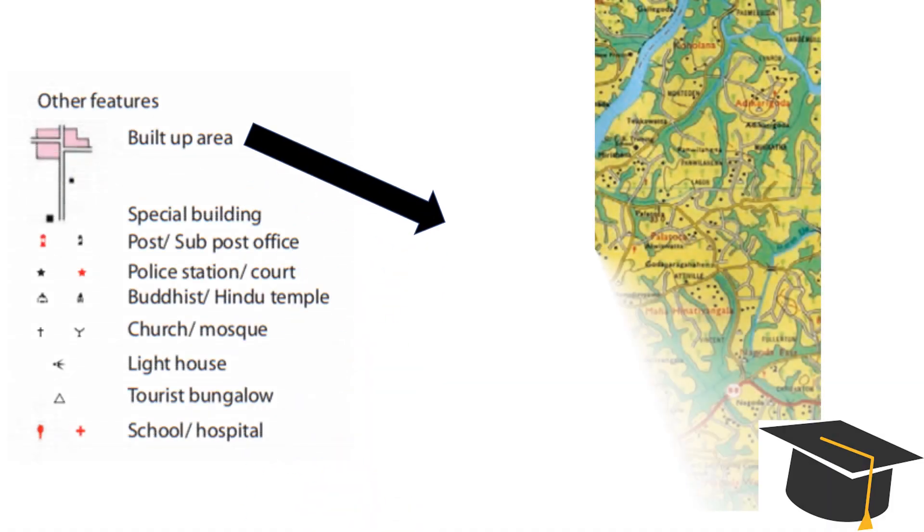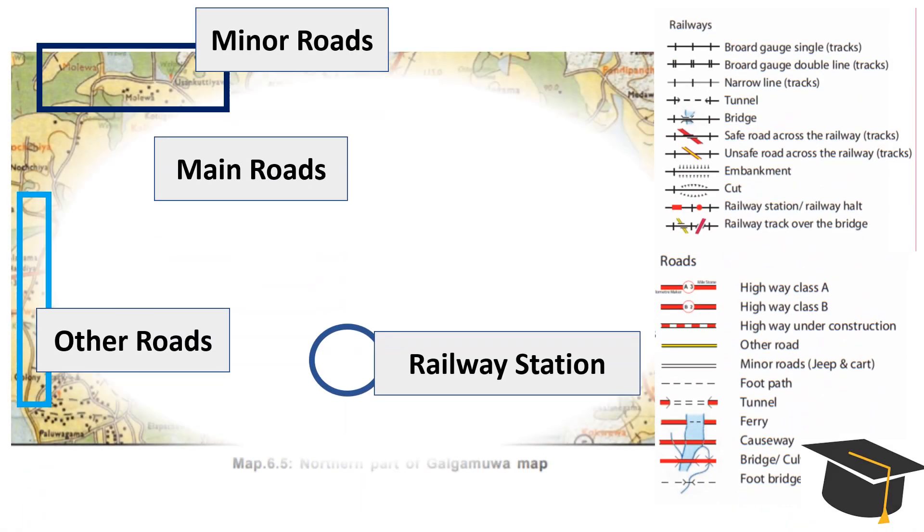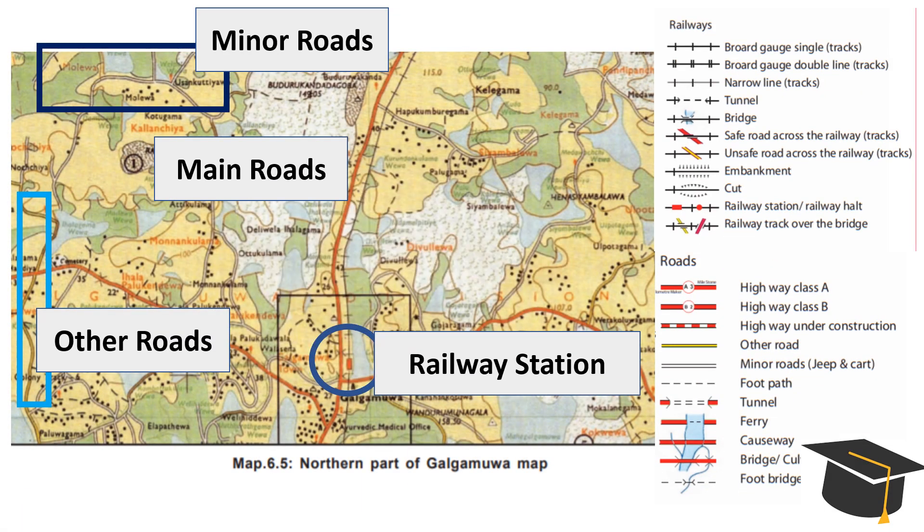This is a part of topographic map of Collector area. You can see the special buildings, roads, built-up areas and schools, etc. More cultural features can be seen here. A part of Galle metric map is presented here. You can clearly see the conventional signs represented on the map. These signs are useful to analyze data and get a clear idea of a particular area.